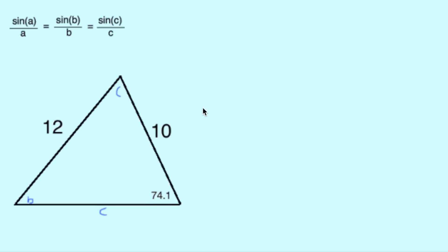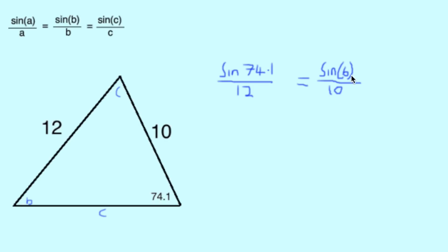We can see that we have an angle A and side A, so looking to our formula we can write sine 74.1, that's the angle, which goes over our side measurement of 12. This equation we know from our formula will be equal to sine B over 10, the length of side B.